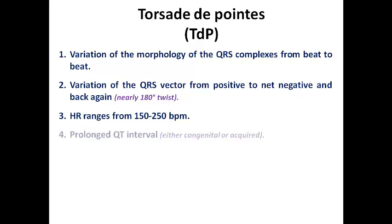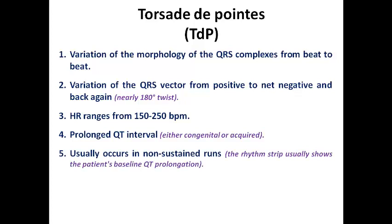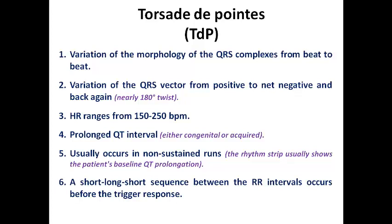Also we can see evidence of prolonged QT interval in the sinus rhythm preceding or following the non-sustained VT, either due to congenital long QT syndrome or acquired causes such as iatrogenic, hypokalemia, hypocalcemia, or subarachnoid hemorrhage. TdP usually occurs in non-sustained runs, and the rhythm strip shows baseline QT prolongation. A short-long-short RR interval sequence is also seen, where an impulse falls in the relative refractory period, predisposing to Torsade de Pointe and then ventricular fibrillation.